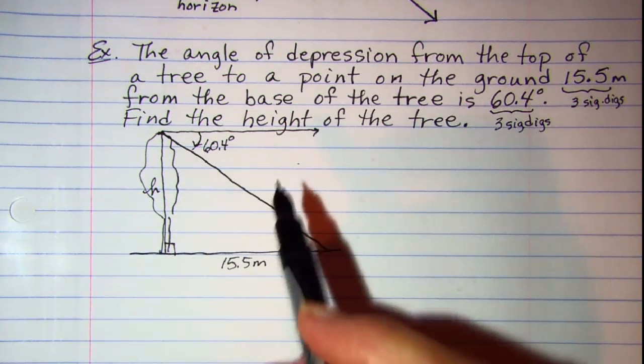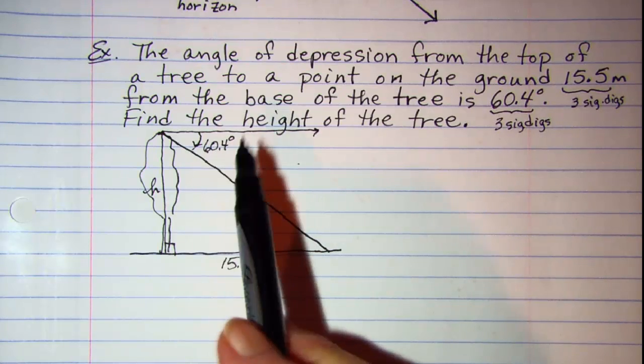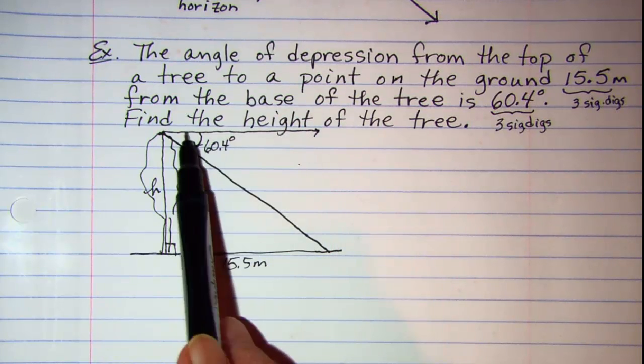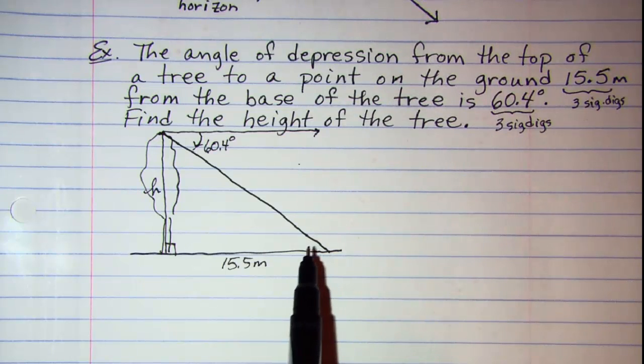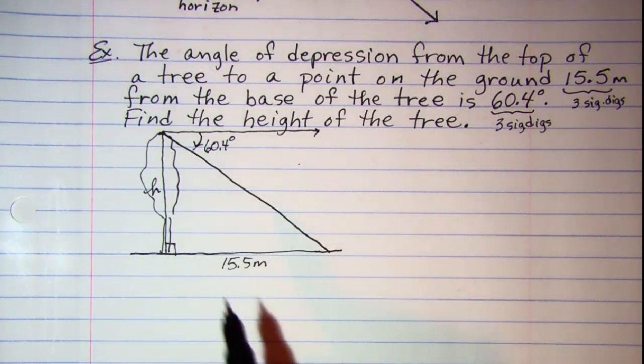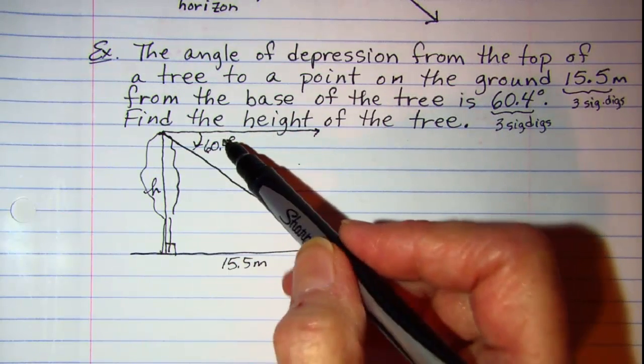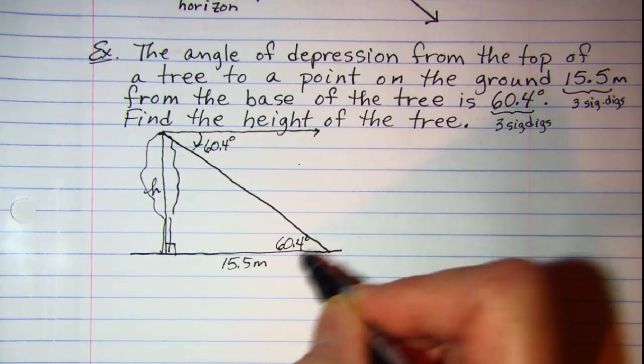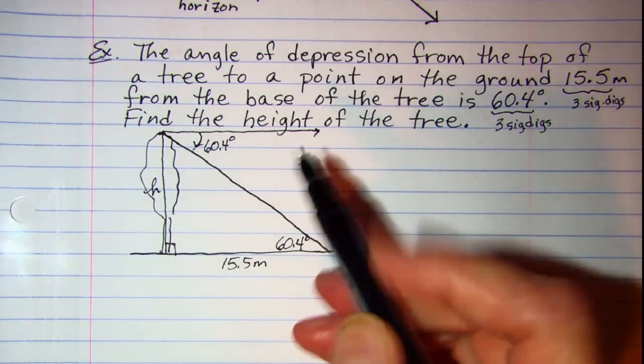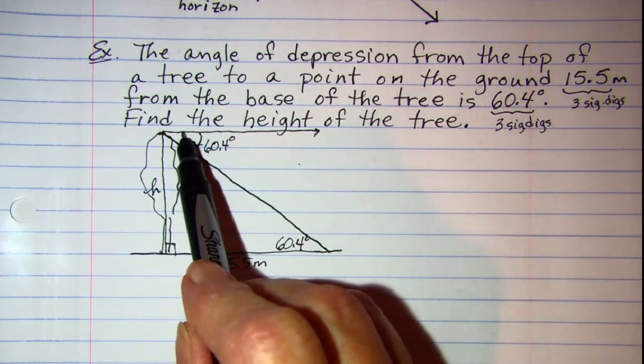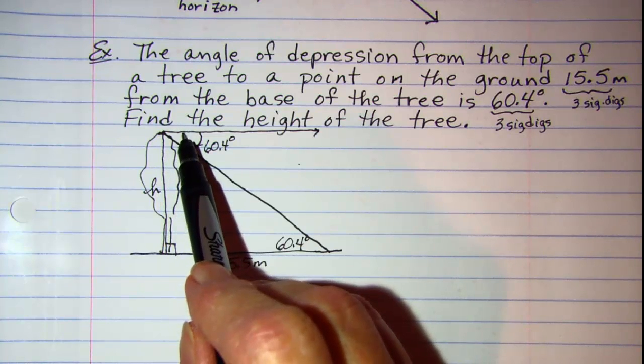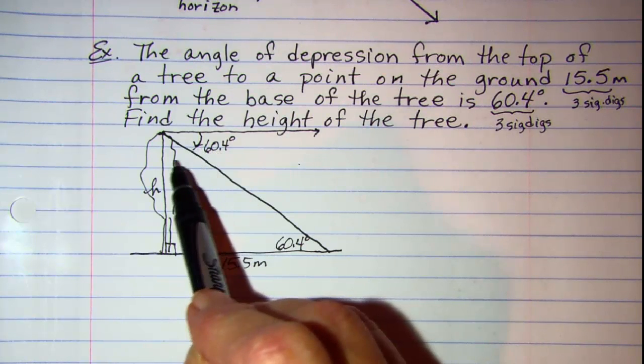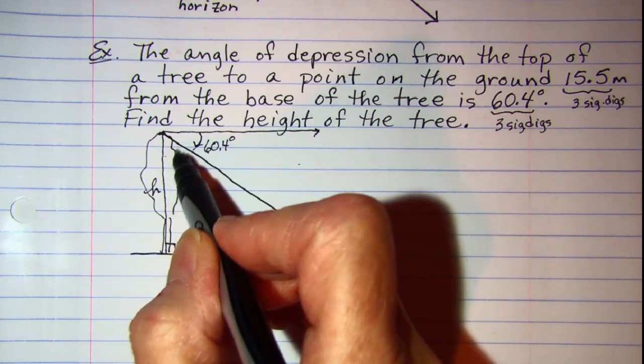Now we need to remember about parallel lines. We know that the horizon right here is parallel to the ground. So we can use what we know about alternate interior angles to state that if this angle is 60.4, then this angle is also 60.4 degrees. Or you can know that this angle up here is 90 and you can subtract 60.4 from 90 to get this measure. Either way is fine.